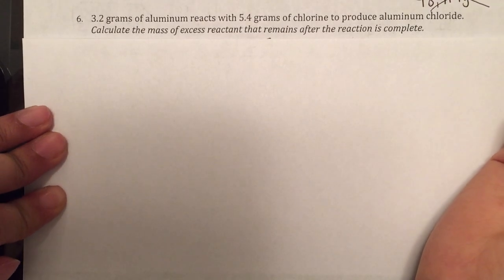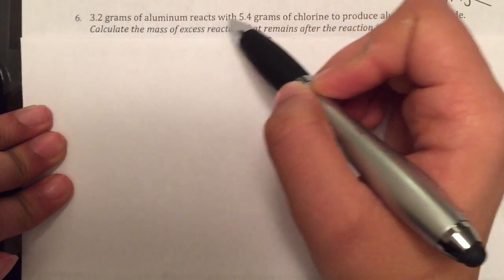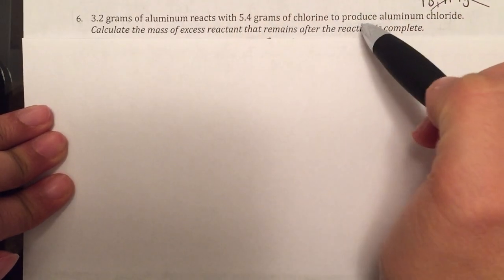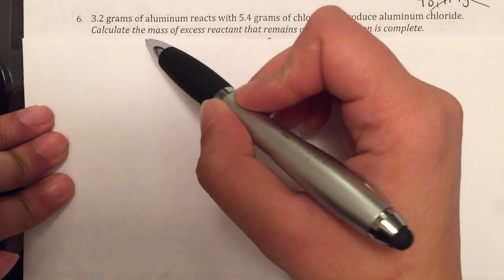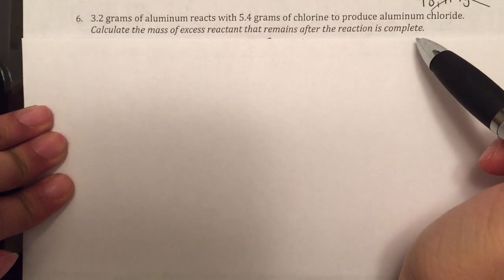Looking at the last problem on the worksheet, which says you have 3.2 grams of aluminum reacts with 5.4 grams of chlorine to produce aluminum chloride. Calculate the mass of the excess reactant that remains after the reaction is complete.